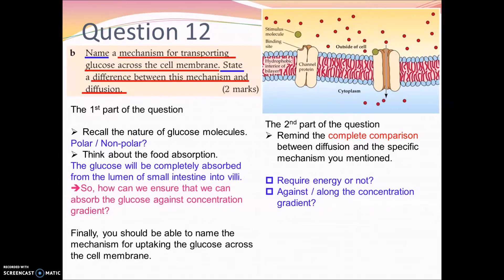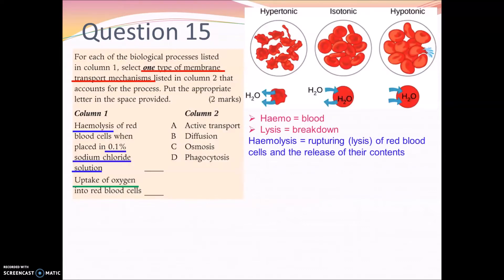What is the function of mitochondria? If you can answer that, you'll be able to name the transport mechanism. Then state the difference between that mechanism and diffusion — specifically whether each process requires energy or moves substances along or against the concentration gradient. Remember to provide a complete comparison: 'A is something, but B is something.' That's what we learned in chapter 2.